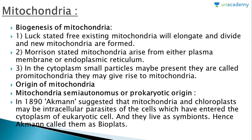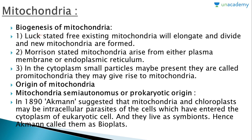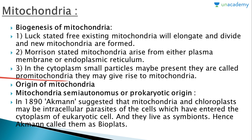Beginning with the lesson, first we will study the biogenesis of mitochondria. There are three theories related to biogenesis. Firstly, Luck stated that free existing mitochondria will elongate and divide to form new mitochondria, like binary fission. Morrison stated that mitochondria arise from either the plasma membrane or endoplasmic reticulum, as it lies close to them in the cytoplasm. The third theory is that small particles called pro-mitochondria may be present in the cytoplasm and give rise to mitochondria.